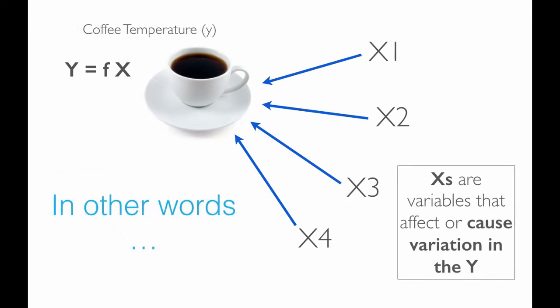In other words, the X's are variables that affect or cause variation in the Y. So as these variables change, they cause the temperature of the coffee to change as well.